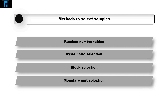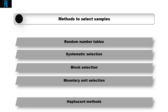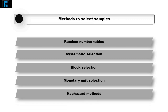Monetary unit selection is where the largest balances and transactions are selected to test — if mistakes are found they are more likely to be material. And haphazard methods are any other methods the auditor may use to select transactions, though the auditor should be careful not to allow bias.